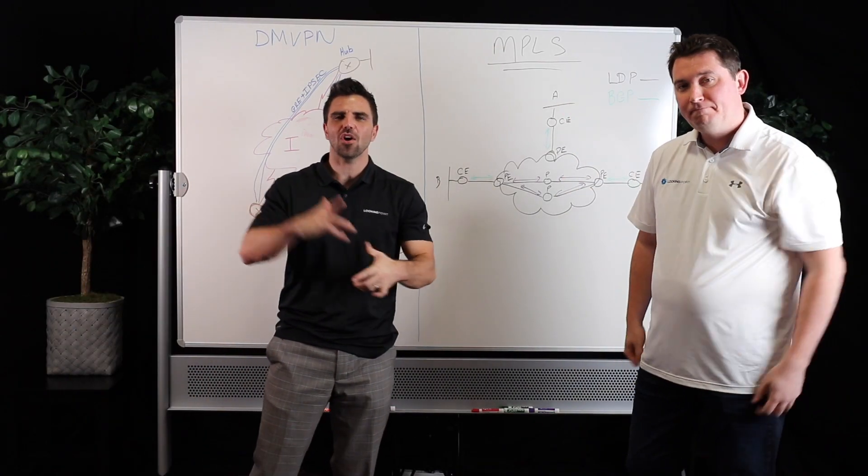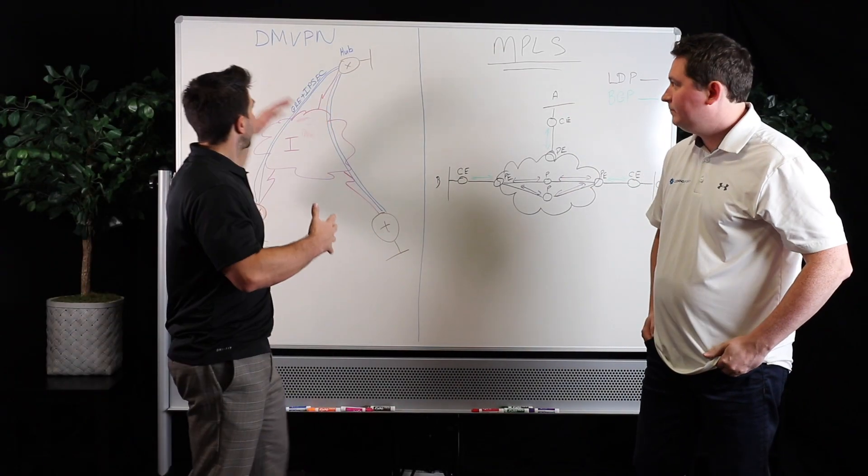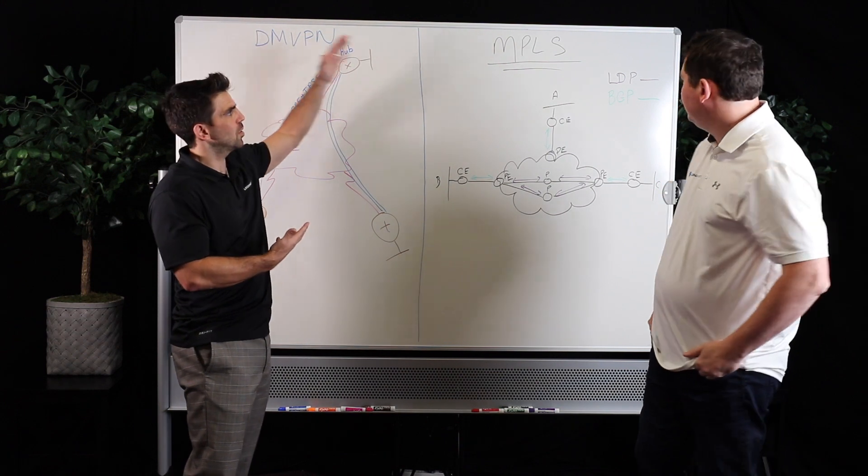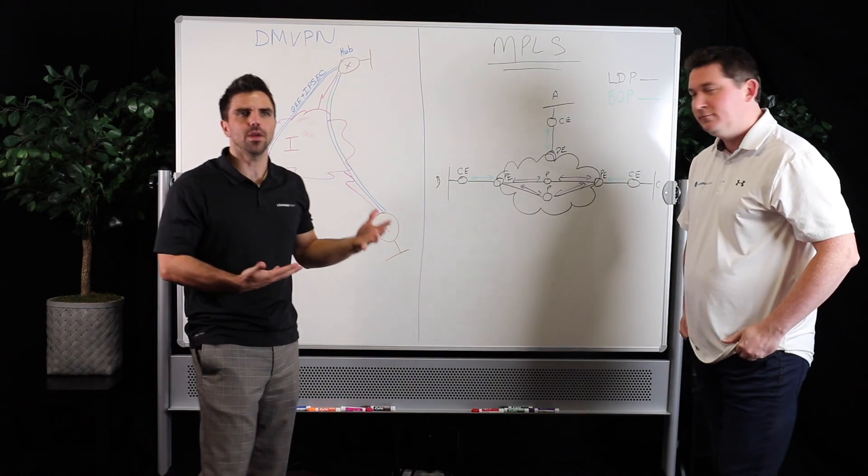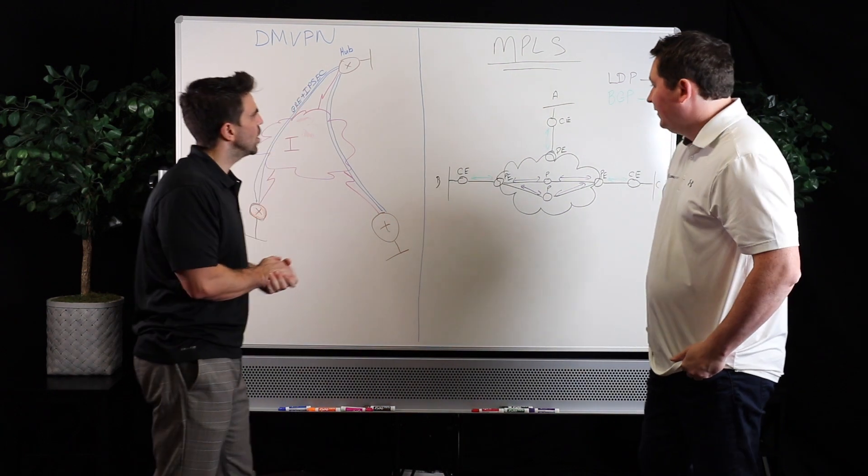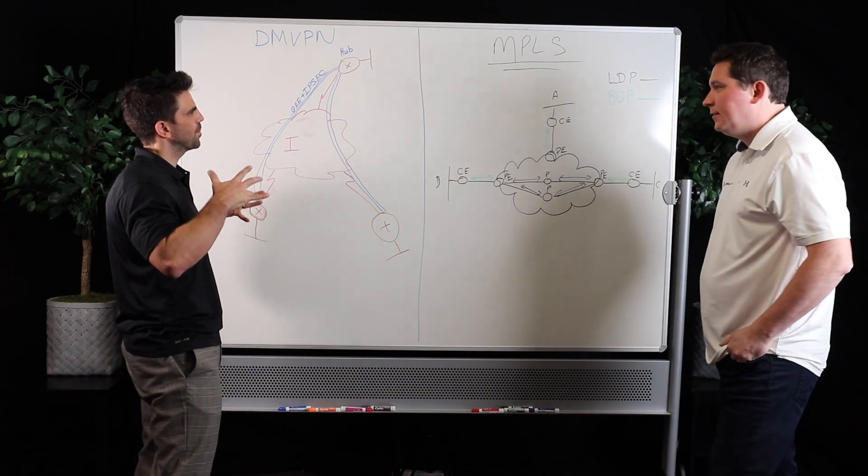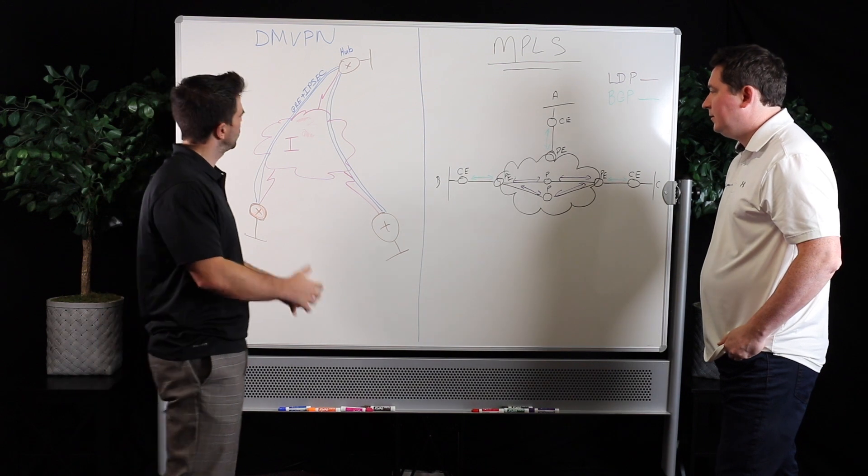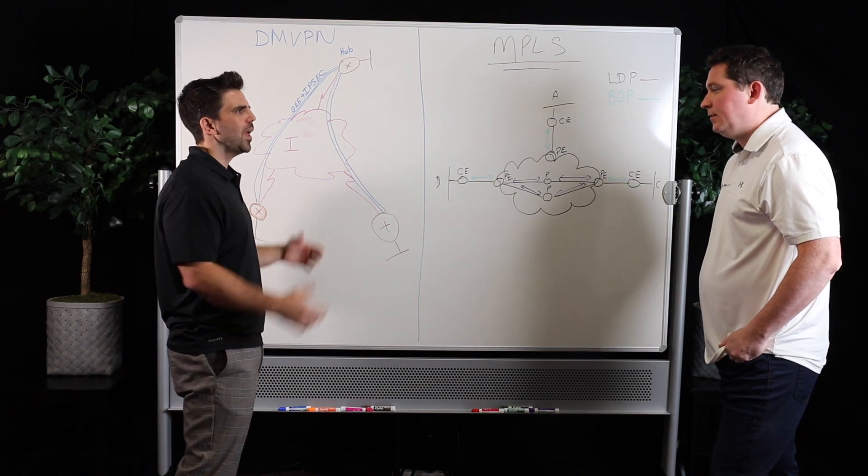Alright, so we got our drawings all done. We drew up, I took the DMVPN and Chris did the MPLS, and obviously his MPLS looks better than my DMVPN. Oh, I don't know about that. But, alright, so you want to take us through MPLS because this is the tried and true provider WAN.